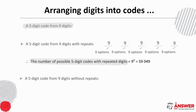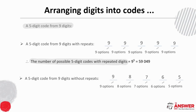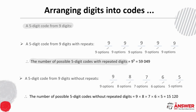For when digits cannot be repeated, we have nine options for the first slot, then eight options for the second slot, then seven, then six, then five. This outcome is a little different from our factorial situation in that it doesn't cover all the positive natural numbers nine and less. But applying the fundamental counting principle — finding the product of options for each choice — the number of possible five-digit codes without repeated digits is nine times eight times seven times six times five, which is 15,120.